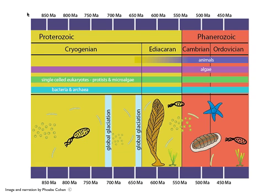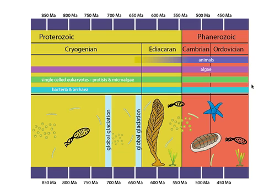This timeline shows a slice of the entire geological timescale. It runs from 900 million years ago on the left to 400 million years ago on the right. There are timescales showing MA, millions of years, across the top and across the bottom. The ranges of the major groups of organisms that lived during this time period are shown here by these horizontal bars.